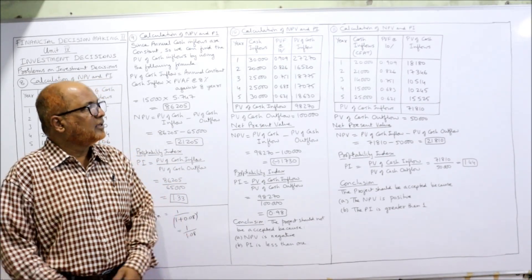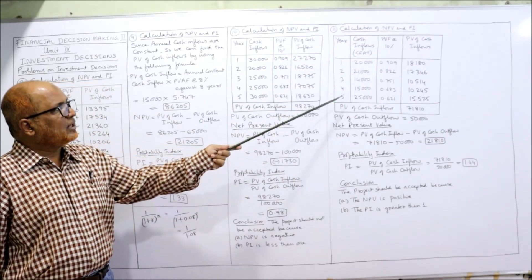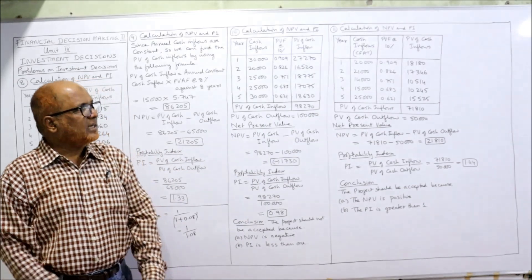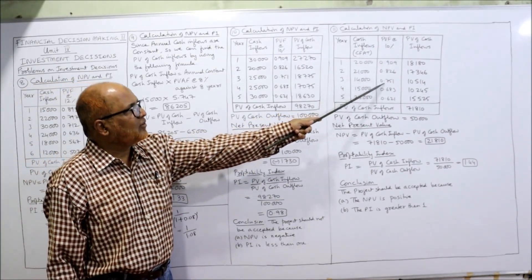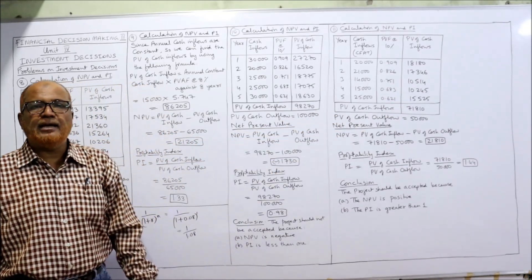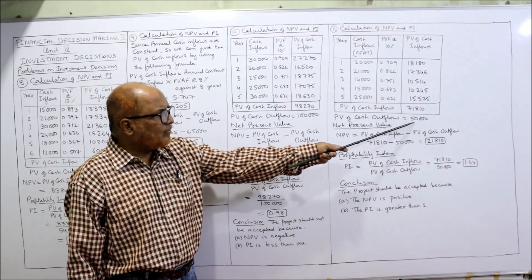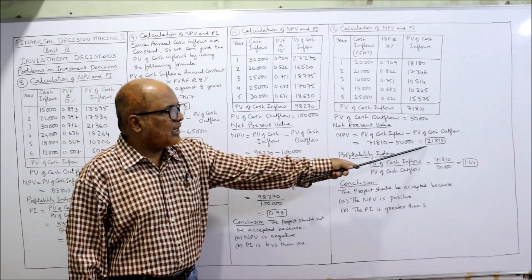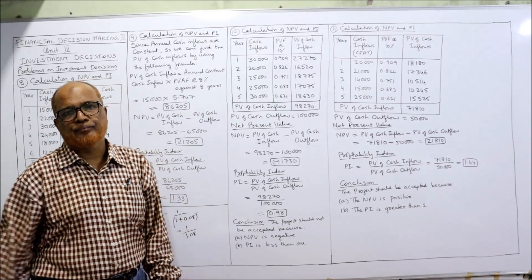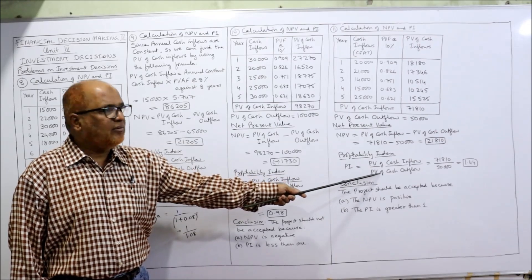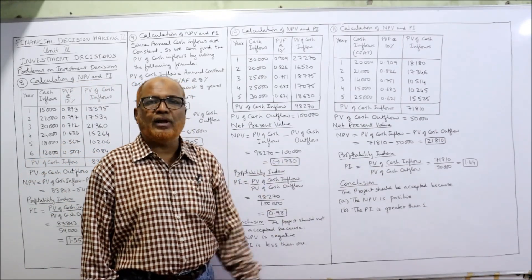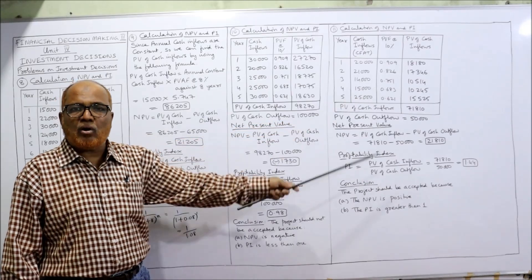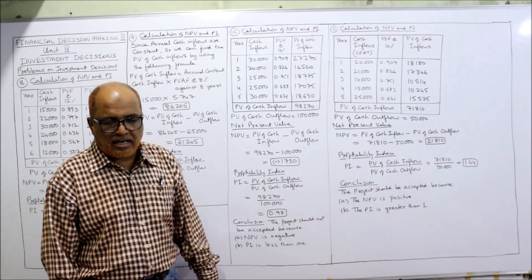Using 10% PV factors (0.909, 0.826, 0.751, 0.683, 0.621), multiply each CFAT by its PV factor and sum — total PV of cash inflows = 71,810. PV of cash outflow = 50,000. NPV = 71,810 − 50,000 = 21,810 (positive). PI = 71,810 ÷ 50,000 = 1.44, which is greater than 1. Conclusion: accept this project because NPV is positive and PI is greater than 1.